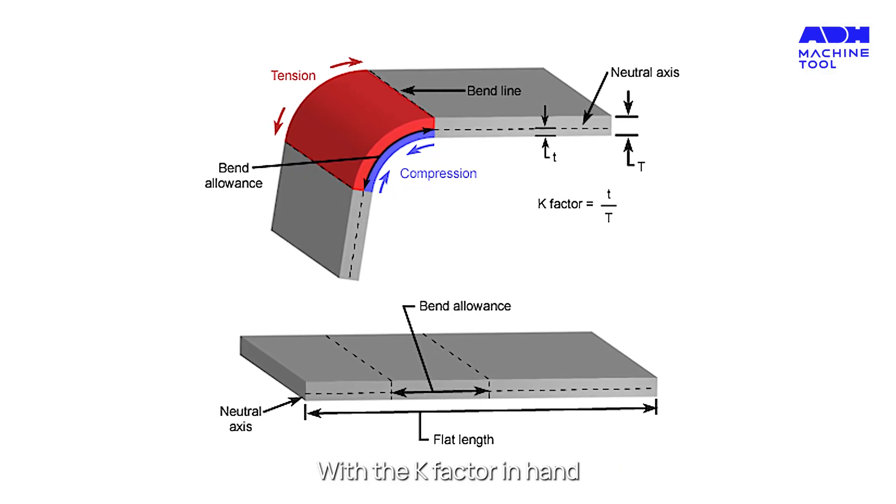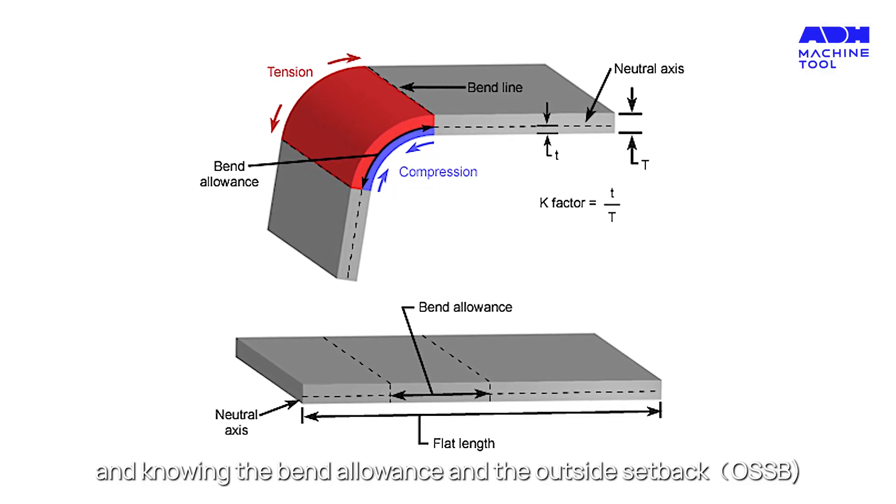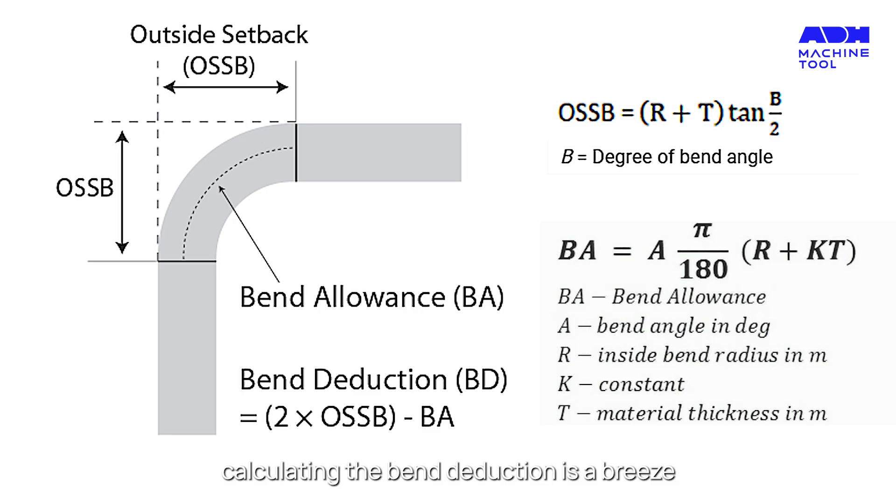With the K factor in hand and knowing the bend allowance and the outside setback, calculating the bend deduction is a breeze. The formula is BD equals 2 times OSSB minus BA. It's a formula that ensures every bend is a work of art.